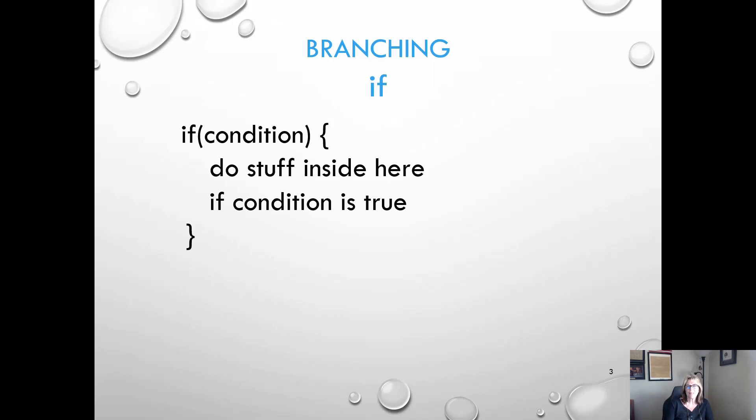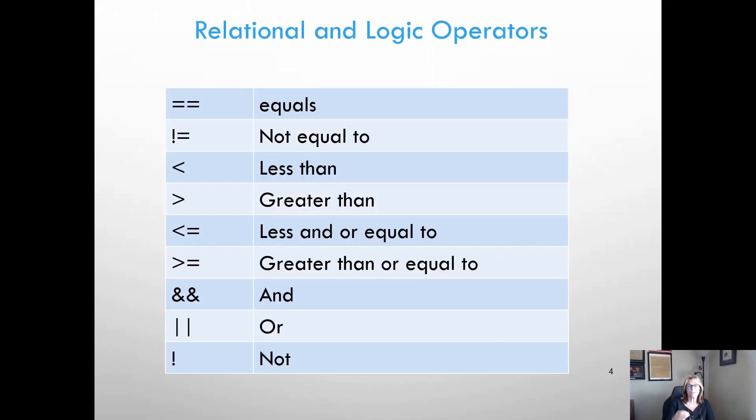These are some of the operators that we use when talking about the condition itself. You should be familiar with these. The AND, OR, and NOT operators might be different than what you're used to. The AND is dual ampersands, the OR is dual pipes, and the NOT is the exclamation point.